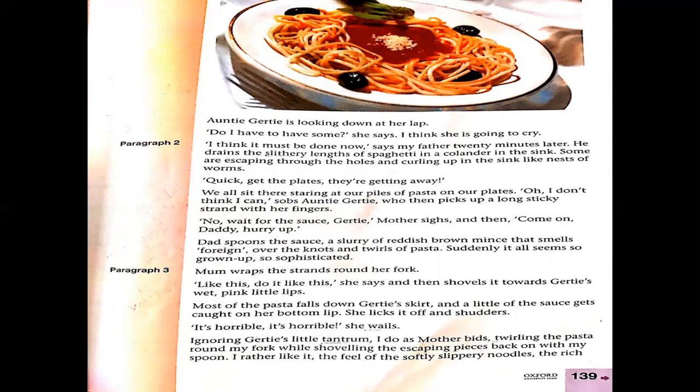By looking at that strand of pasta, Aunty Gertie is just sobbing — behaving like a child, thinking she can't eat it. The mother says, 'Wait for the sauce, Gertie — let the sauce come so we may have a dressing of sauce over the spaghetti.' Dad disposes the sauce — a slurry of reddish brown mince that smells foreign — pouring it over the knots and twirls of pasta.